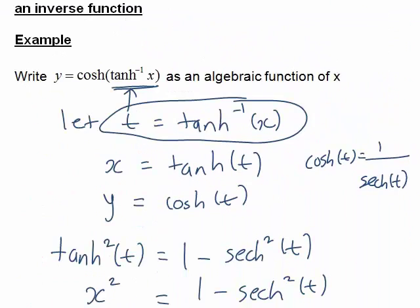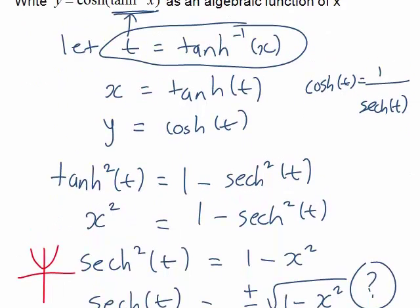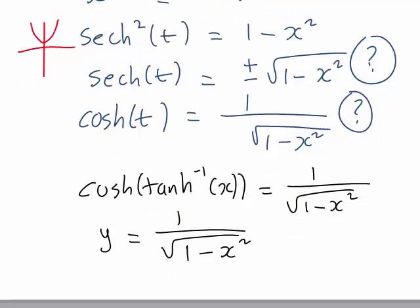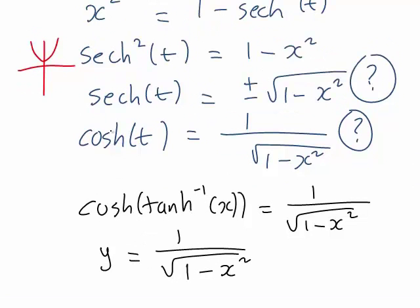So we started by letting t be the inside function, which was our inverse hyperbolic function, inverse tanh of x. We then found an identity that related the two things we were interested in and rearranged that. Very importantly, we had to think about the behavior of the function we were looking at. Because cosh of t, or cosh of anything, is always positive, we knew the negative would not be realistic. Therefore we finally concluded that we could rewrite cosh of inverse tanh of x as y equals 1 divided by the square root of 1 minus x squared.